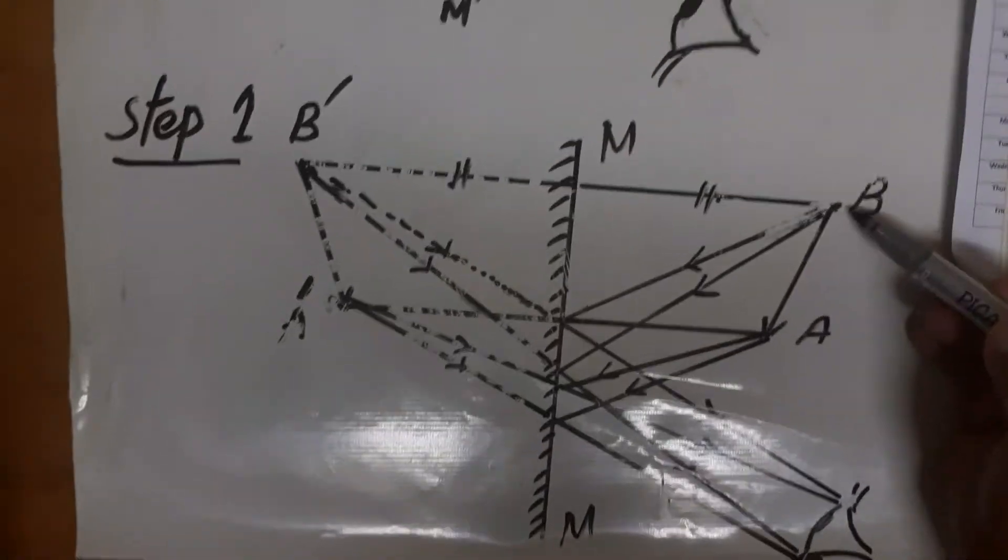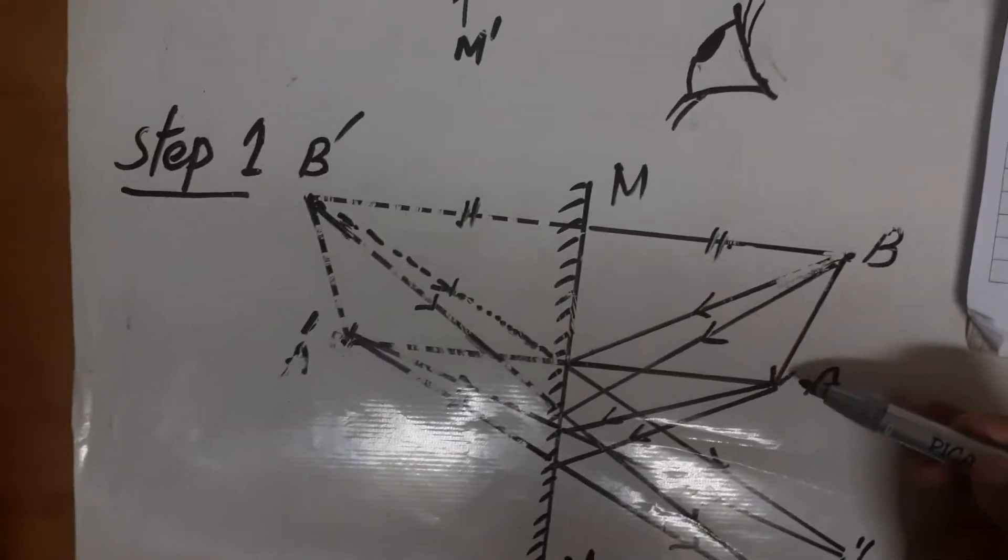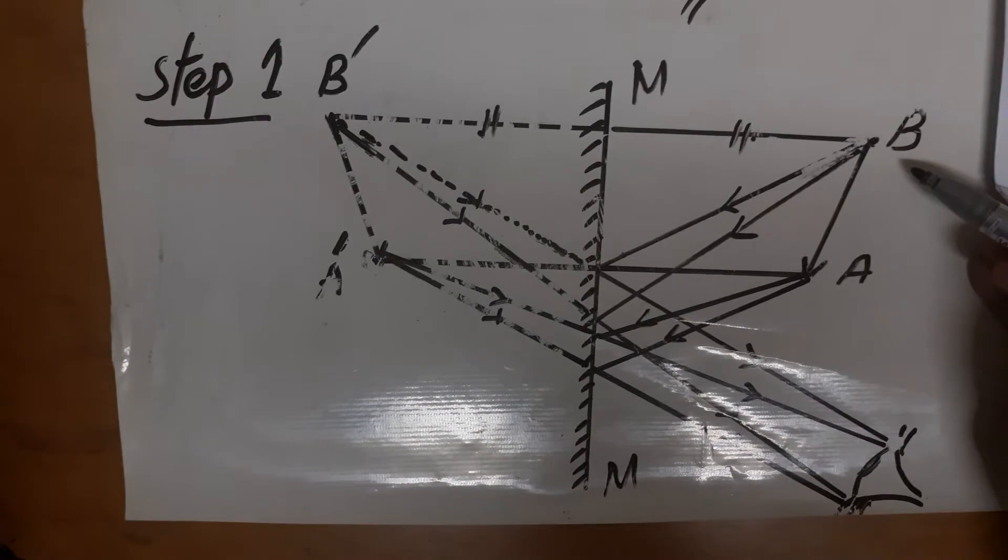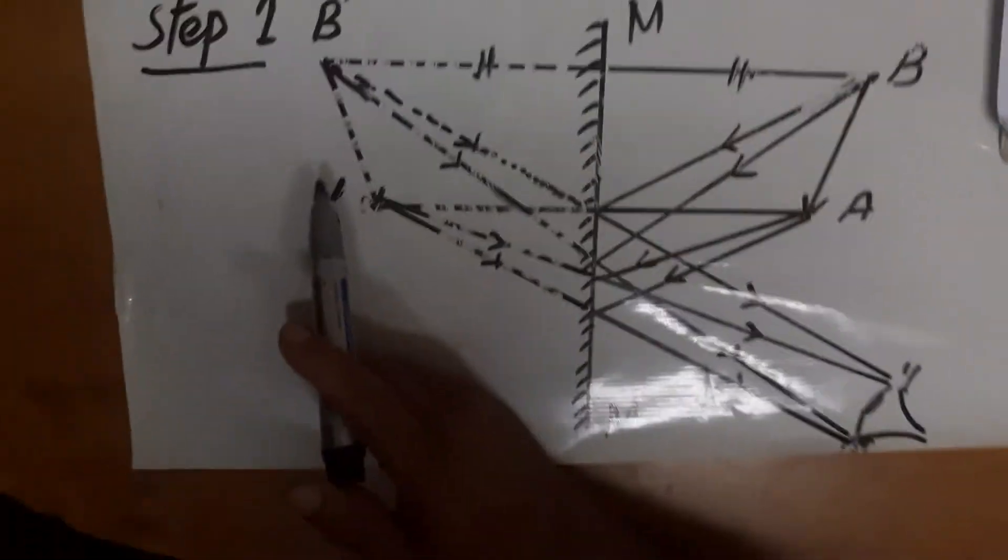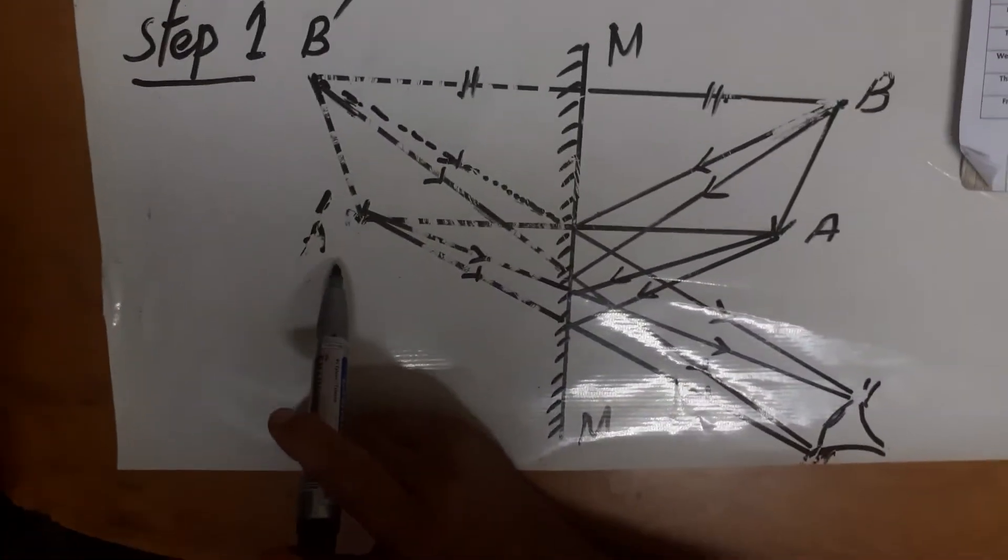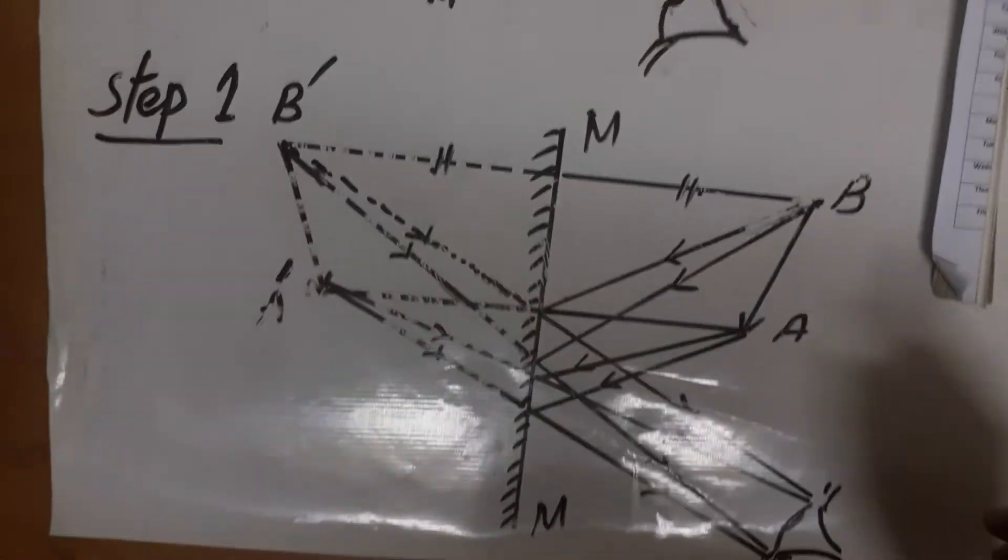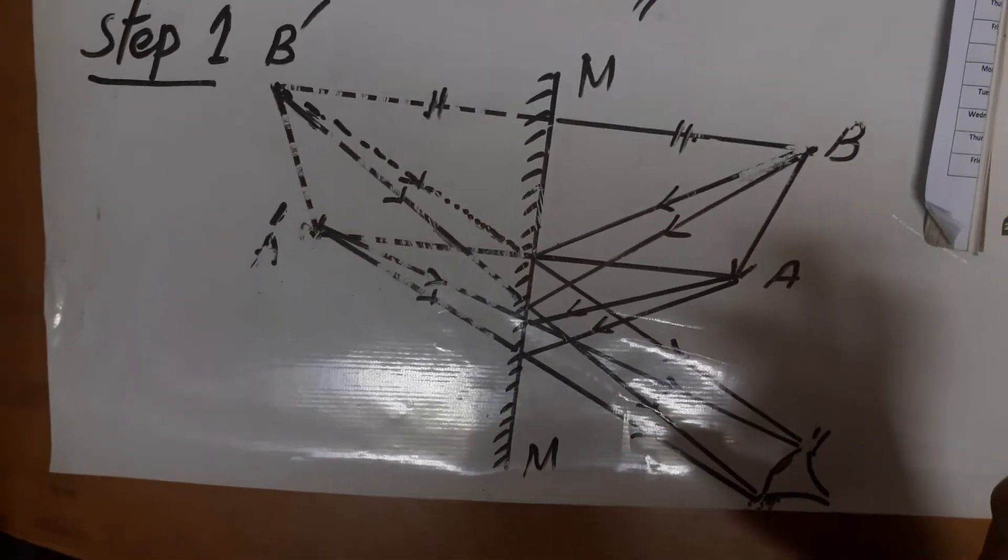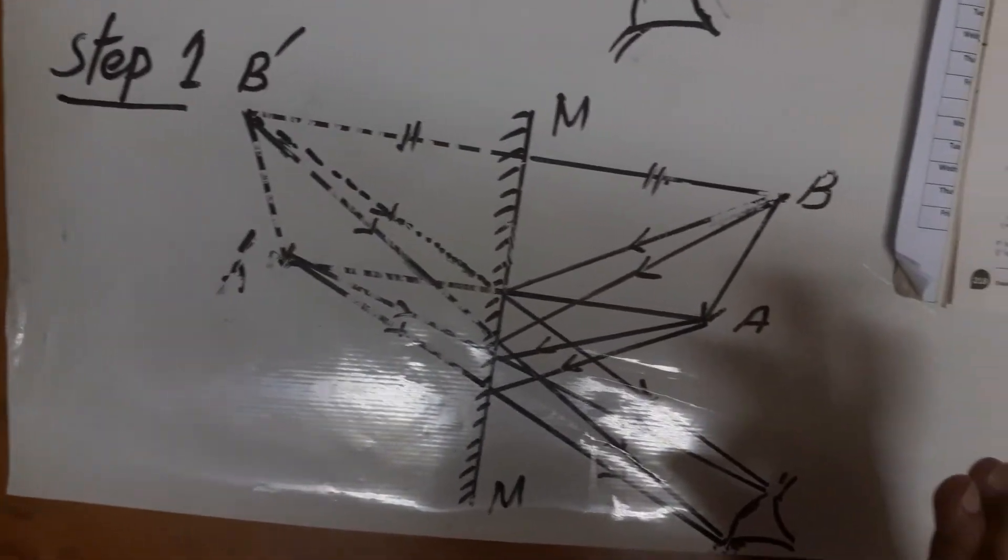Next characteristic was the size or height of the object AB. The same height will have the image A dash and B dash. These two characteristics we studied are very important.